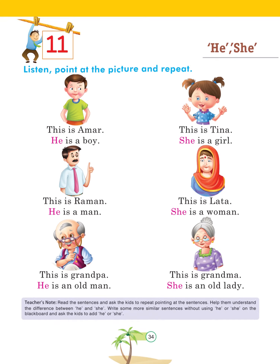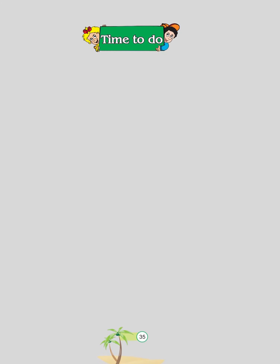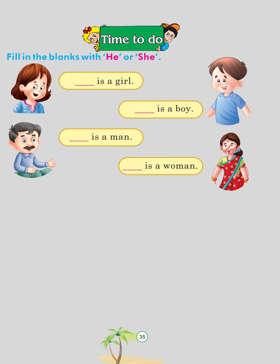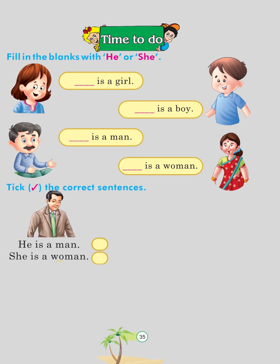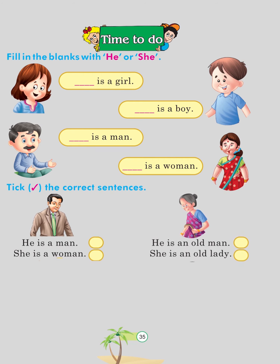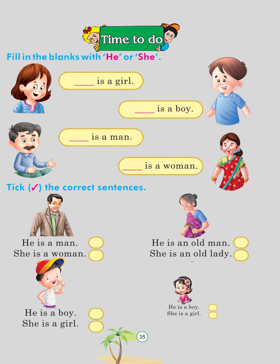Teacher's note: Read the sentences and ask the kids to repeat. Help them understand the difference between 'he' and 'she.' Write sentences without he or she on the blackboard and ask kids to add he or she. Time to do. Fill in the blanks with he or she: She is a girl. He is a boy. He is a man. She is a woman. He is a man. She is an old lady. He is a boy. She is a girl.